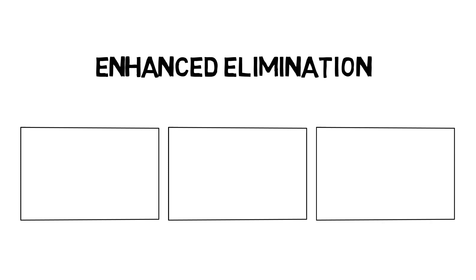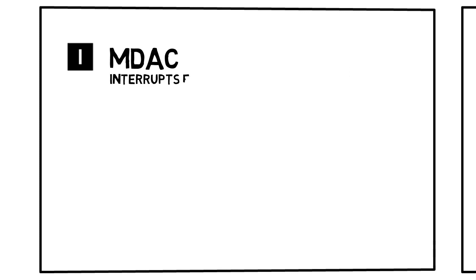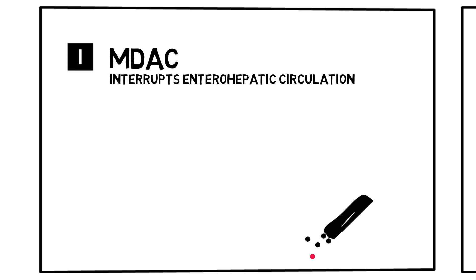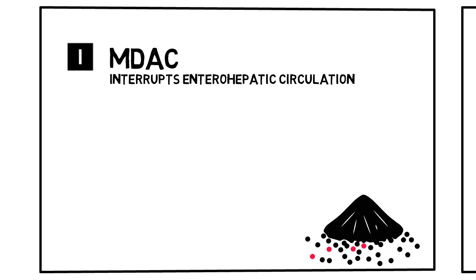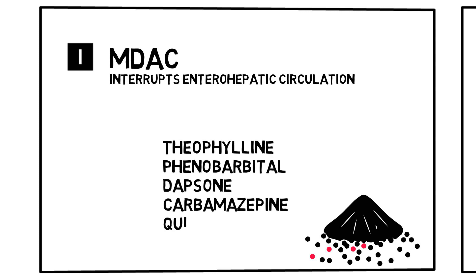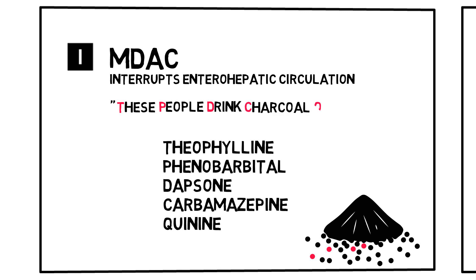Enhanced elimination. There are three common ways for enhanced drug elimination. The first is by applying multiple doses of activated charcoal, which interrupts the entero-hepatic circulation. Note that it is only effective in drugs that have profound biliary excretion. Common ones include theophylline, phenobarbital, dapsone, carbamazepine, and quinine — remembered by the phrase: 'These people drink charcoal quickly.' Note that multiple dose activated charcoal requires the addition of laxatives as it could cause constipation, though too many laxatives decrease the effectiveness of your treatment.